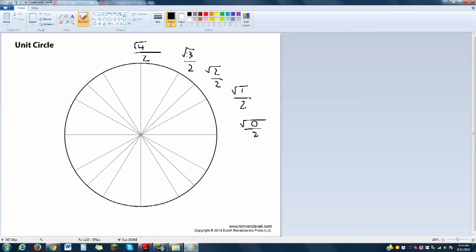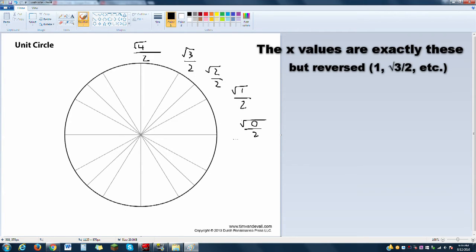Now all you have to do, this is for the sine value of course, all you have to do is simplify these numbers and if you can't simplify them then you leave them like this. This one you can't simplify and this one you can't simplify, but this one becomes 1.